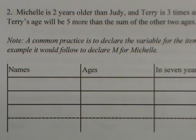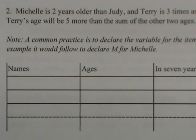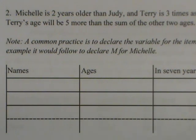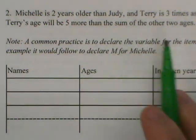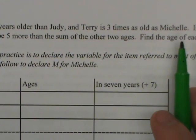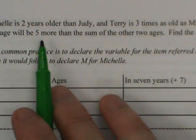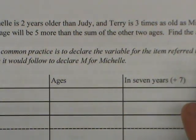This is an example of age word problems. Here we'll see three people in the problem. It says: Michelle is two years older than Judy, and Terry is three times as old as Michelle. In seven years, Terry's age will be five more than the sum of the other two ages. Find the ages of each now.